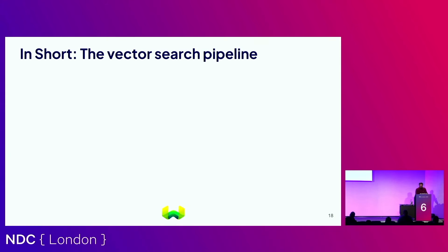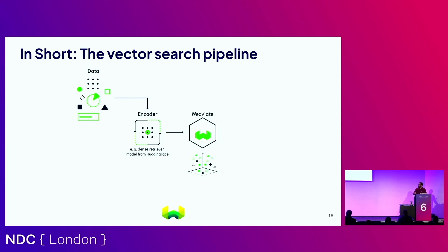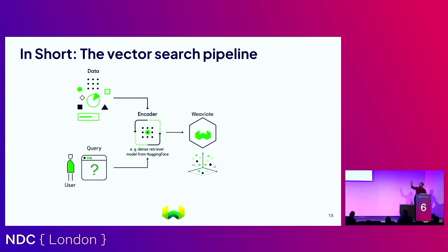In short, the entire vector database vector search pipeline looks like this: you start with your machine learning model — the encoder — which encodes data into vectors. Your data comes in, it generates vectors. Every data object gets a vector associated with it, so in the vector database you'll have both your data object and the corresponding vector stored. Then the user comes along with a query in the same format as your data. That data goes through the exact same encoding pathway through the machine learning model, you get your query vector, that gets projected into vector space, and out comes a list of candidates that match as close as possible to your query.